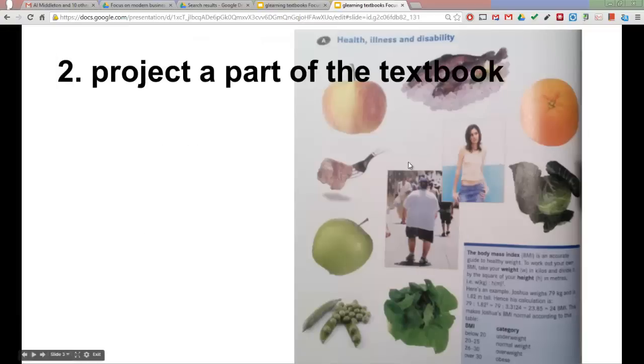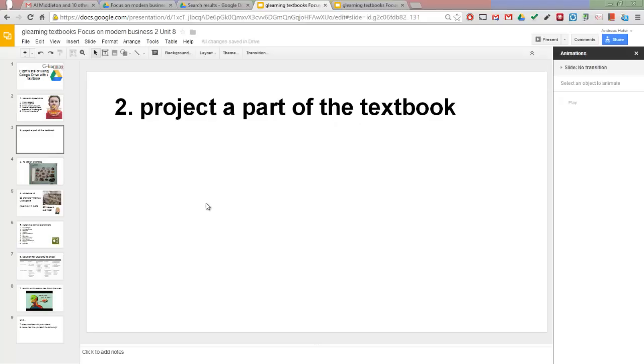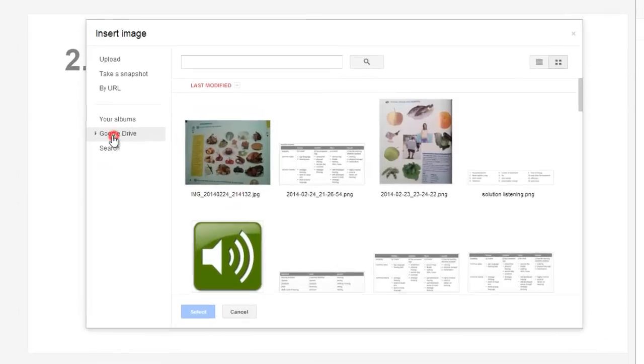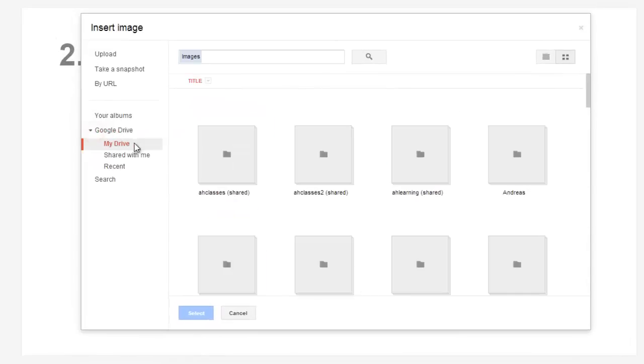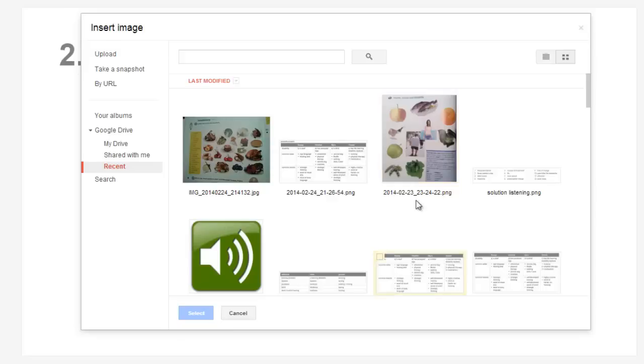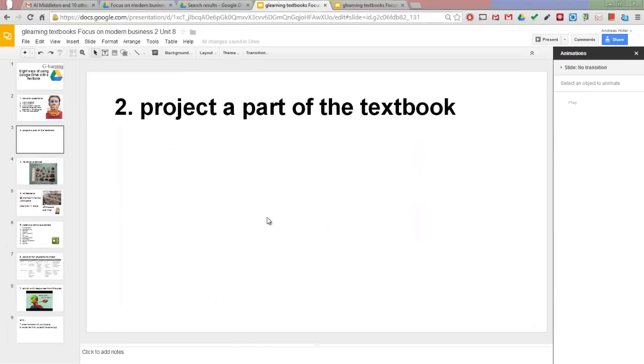Number 2: Sometimes you might want to project a part of the textbook onto the board. Just snap a picture with your tablet or smartphone and upload it to your drive. You can easily insert the photo. Just go to Insert, Image, and then choose Recent and you get most recent files. Just select the image and insert it into your slide.